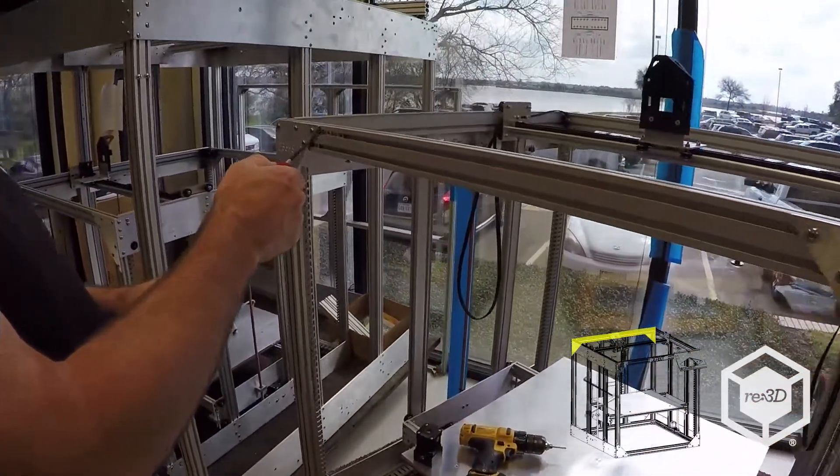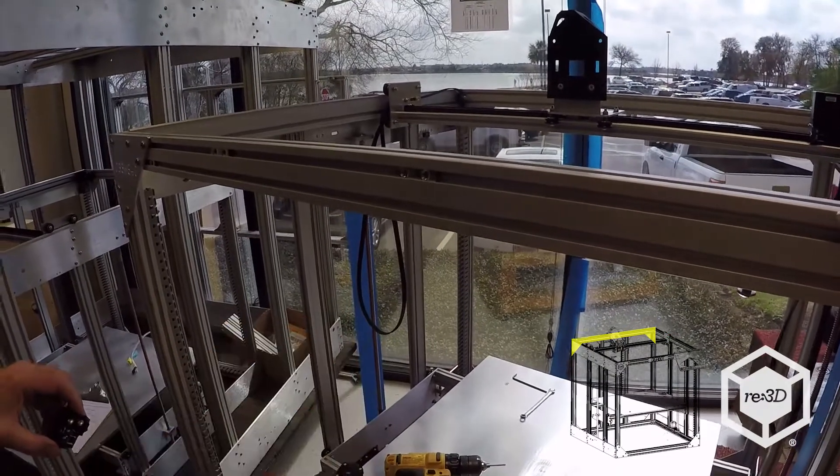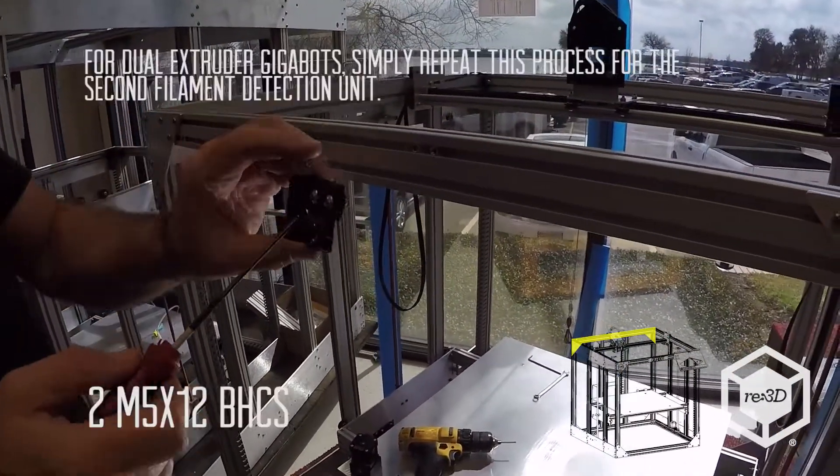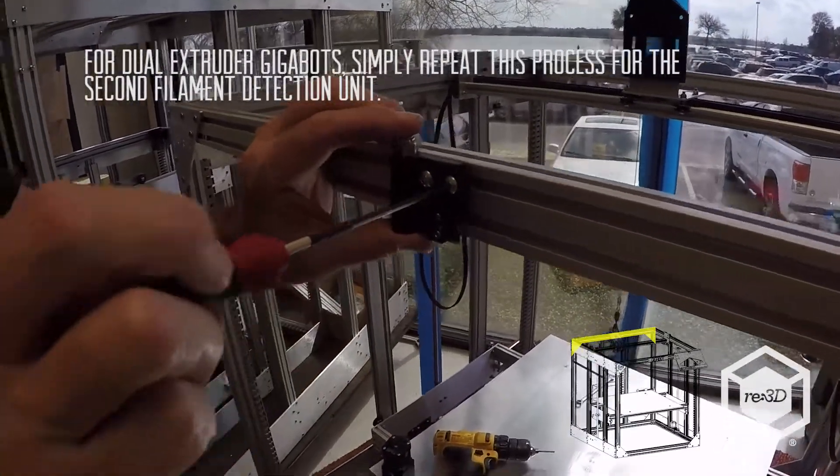If you assembled your bot correctly, you'll have four T-nuts already in back. Normally the electrical uprights would be here, but use two M5x12s and just bolt it on there.